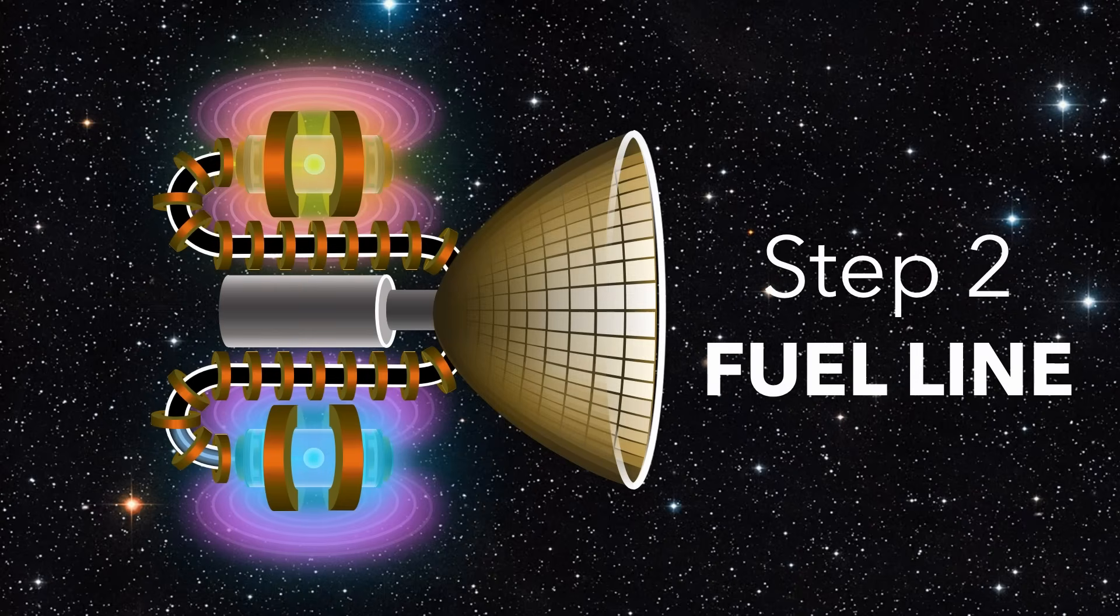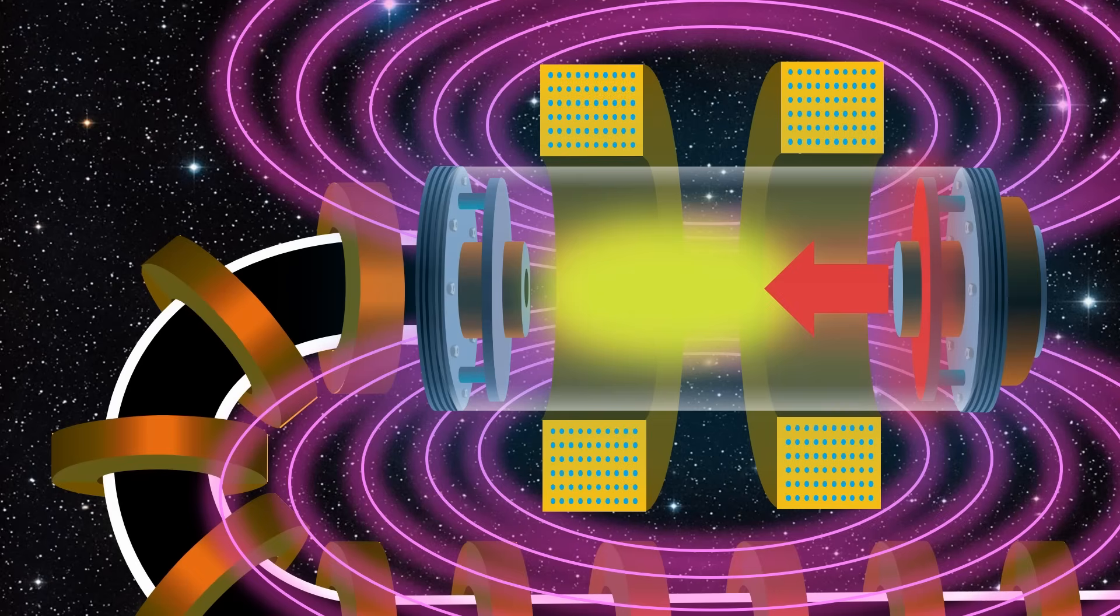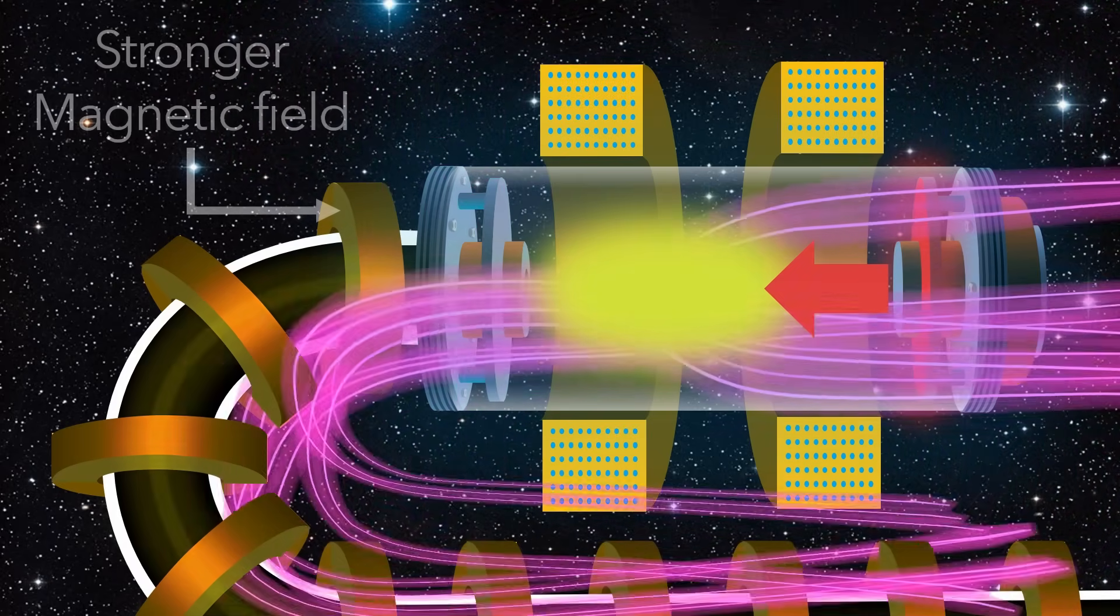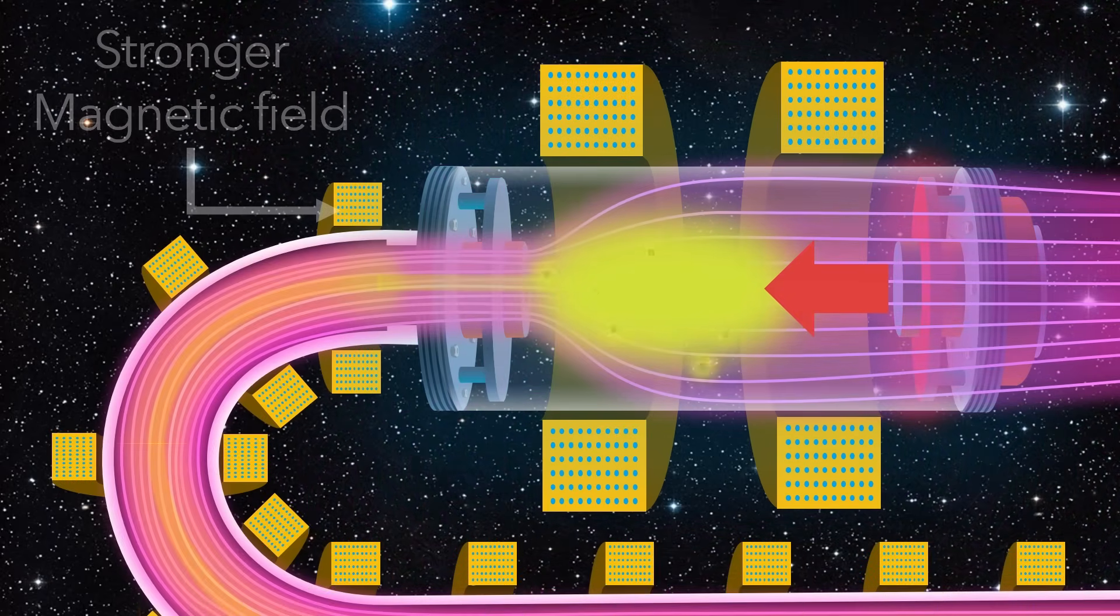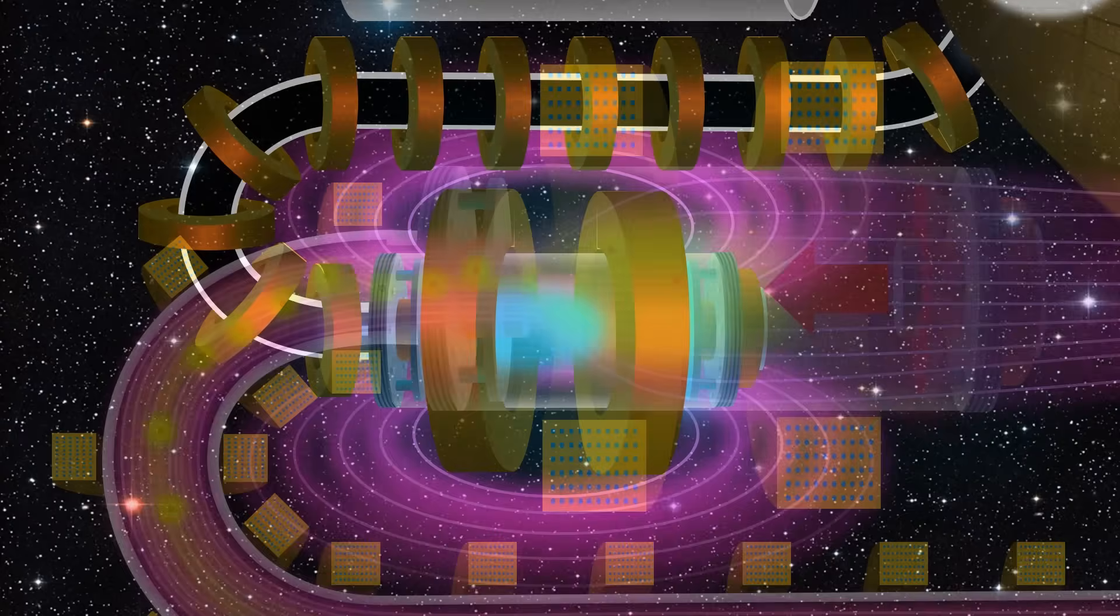So with our antimatter safely stored, how do we feed it into the reaction chamber? The electric field is weakened on one side of the trap so that a small amount of antimatter is pushed into the fuel line. A stronger magnetic field around the line tightens the orbit to prevent contact with the line's walls as it drifts toward the reaction chamber. An equal number of electrons is also fed in.